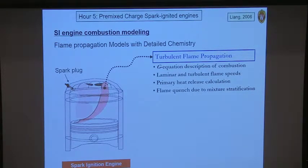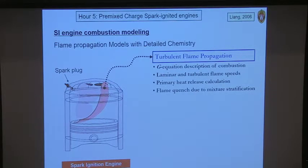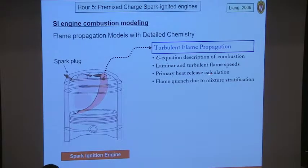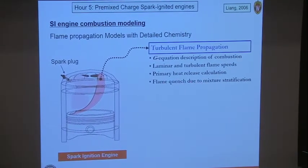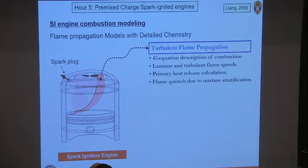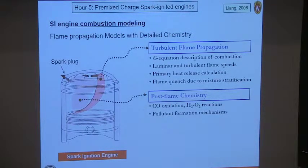The flame is a turbulent flame. The way we describe this, as I discussed, is through the use of the G equation, which accounts for both laminar and turbulent flame speeds. The turbulent flame speed really depends on the geometry of the device. The laminar incorporates fuel effects, and this is used for the primary heat-release calculation. When a flame reaches close to a surface, the heat transfer to the walls takes away combustion energy and arrests the reaction — that's called flame quench. Behind the flame, we have post-flame chemistry that's important. Depending on the combustion strategy, you might have additional CO oxidation or hydrogen-oxygen reactions occurring behind the flame, and eventually this is the material that's going to be exhausted.